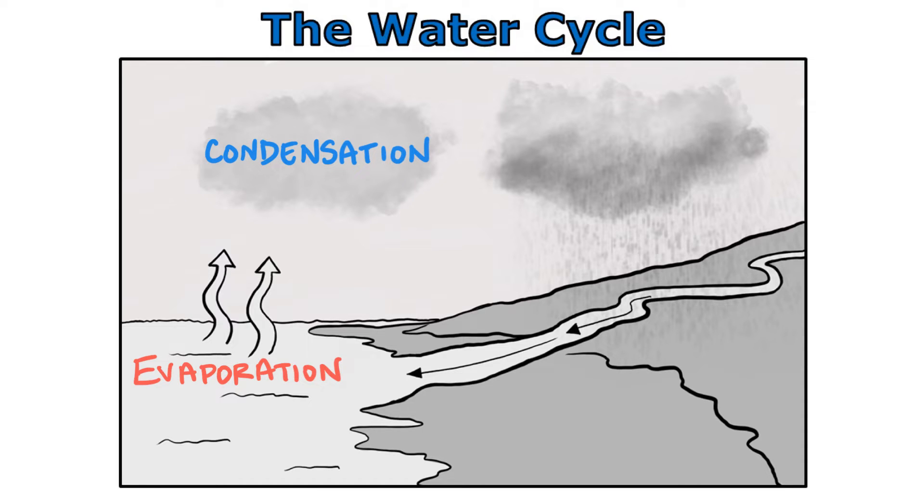Condensation forms clouds as the water vapor in the air condenses into tiny droplets of liquid water. Precipitation is what we call it when the water falls back down to earth, usually in the form of rain.